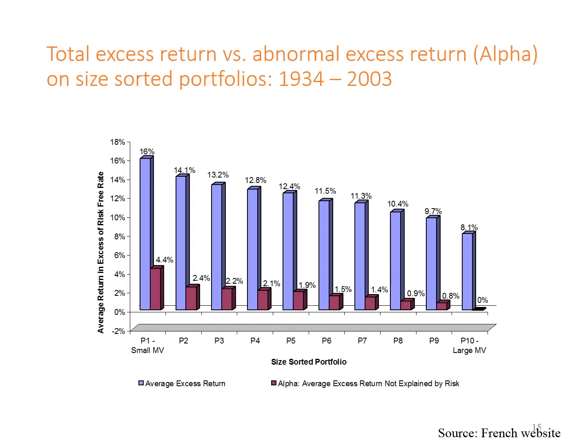Fama and French conducted a study using data from 1934 to 2003. The portfolios are sorted into 10 groups based on size, from smallest to largest. The blue bars represent average excess return and the red bars represent alpha. The findings show that small-cap stocks have higher excess return and alpha than large-cap stocks.